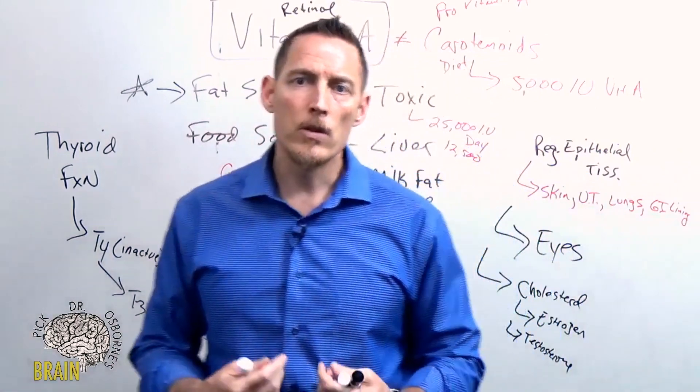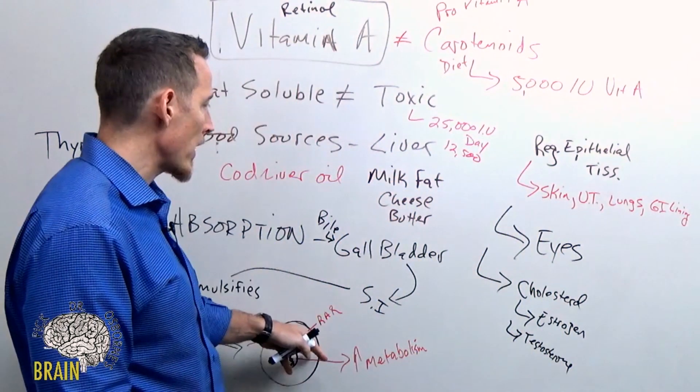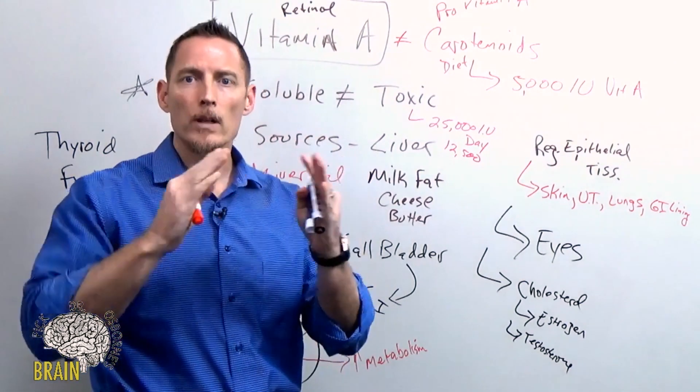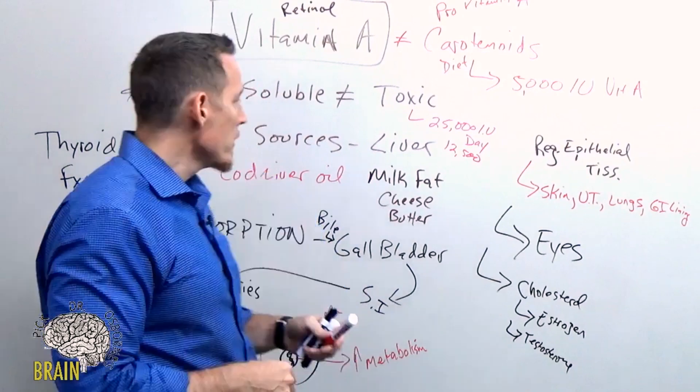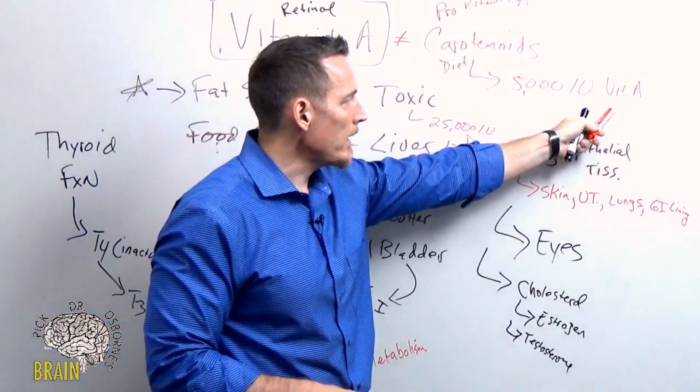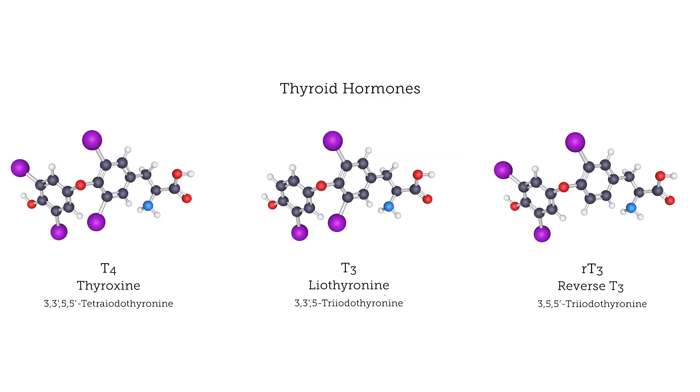If you don't have adequate vitamin A, you're going to have a problem with your thyroid function. Now concomitantly, there's a dual relationship with your thyroid. In order for you to convert carotenoid into vitamin A, this process requires thyroid hormone.